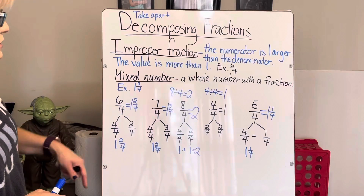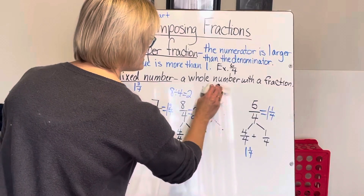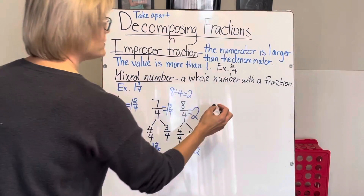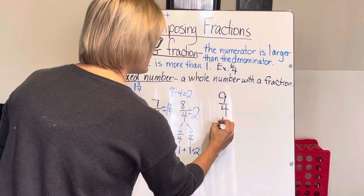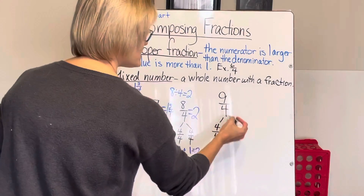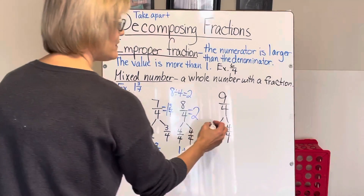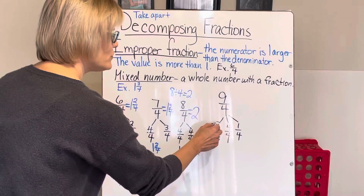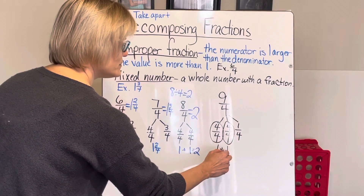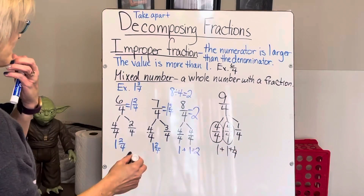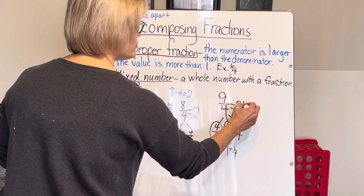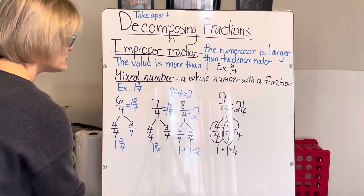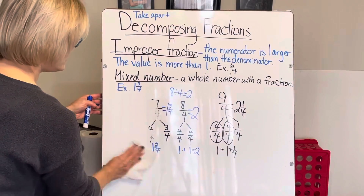So five-fourths equals one and one-fourth, six-fourths equals one and two-fourths, seven-fourths equals one and three-fourths, eight-fourths equals two whole. I'm using the knowledge that when the numerator and denominator are the same, it equals one whole, to pull that whole out and determine what's left. The pattern continues: nine-fourths would be two and one-fourth, ten-fourths would be two and two-fourths.